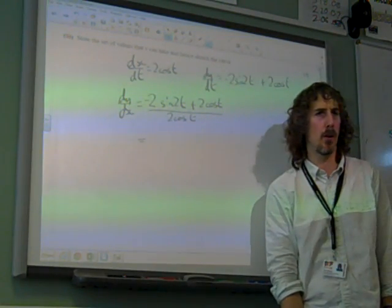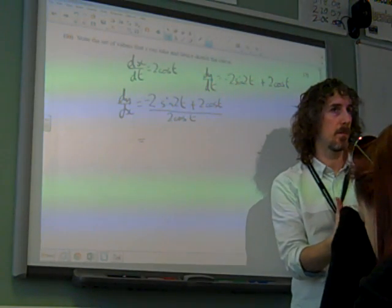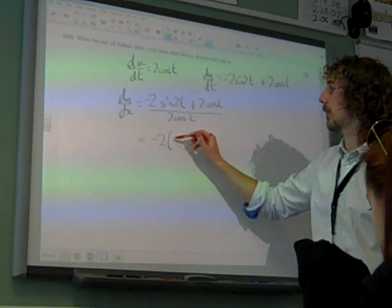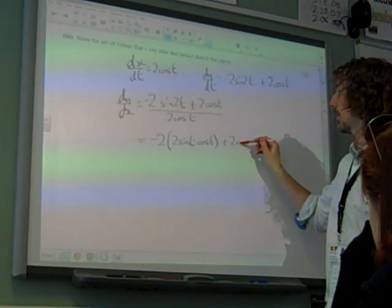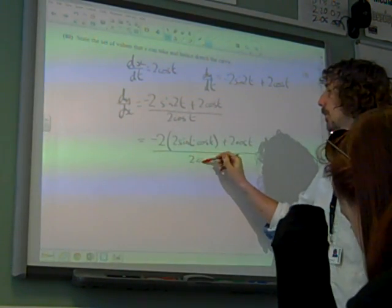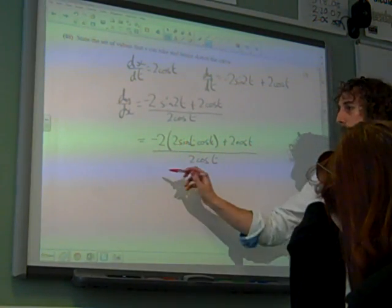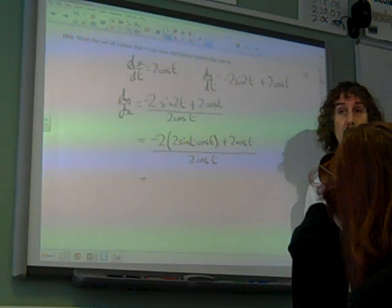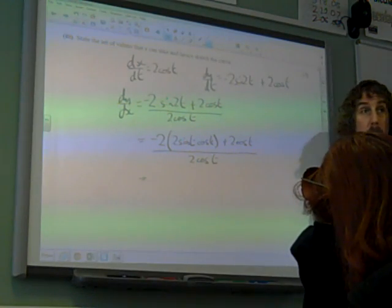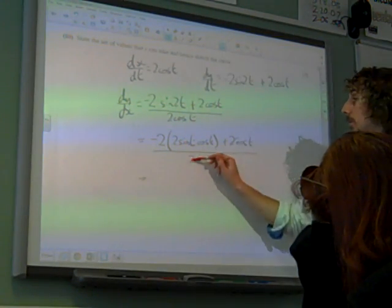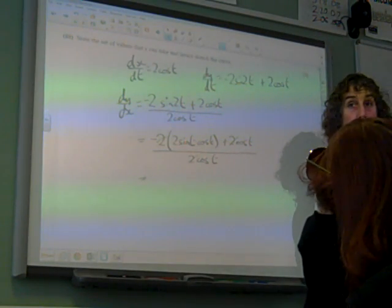So this sin(2t) here is something we're going to have to do something with. We know that sin(2t) is 2sin(t)cos(t). So that's minus 2 times 2sin(t)cos(t) plus 2cos(t) over 2cos(t). We've got 2 as a common factor all the way through, so let's get rid of the 2.